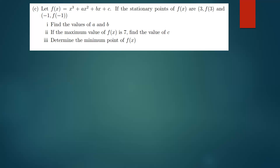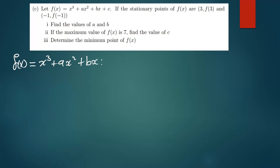We've been given f(x) = x³ + ax² + bx + c. We've been asked to find the values of a and b. Because we've been given two stationary points, we don't know whether these points are maximum, minimum, or point of inflection. One thing you have to understand is that at a stationary point the gradient of any given function is equal to zero.